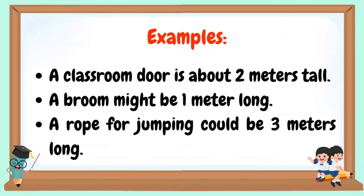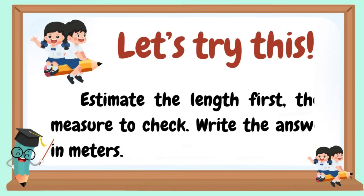Examples: A classroom door is about 2 meters tall. A broom might be 1 meter long. A rope for jumping could be 3 meters long. Let's try this — estimate the length first, then measure to check. Write the answer in meters.